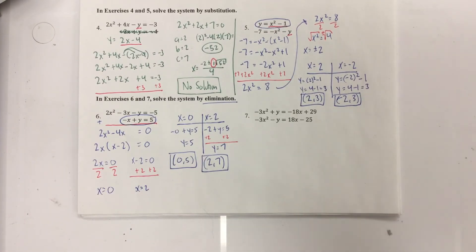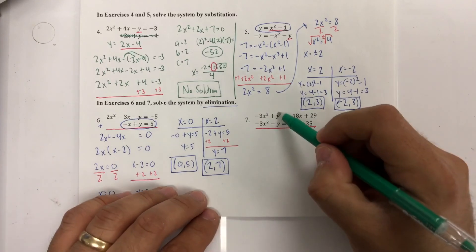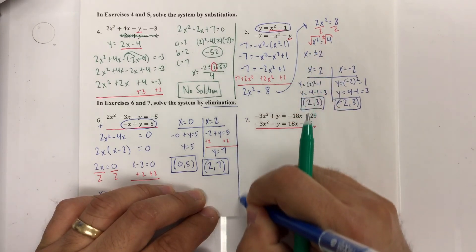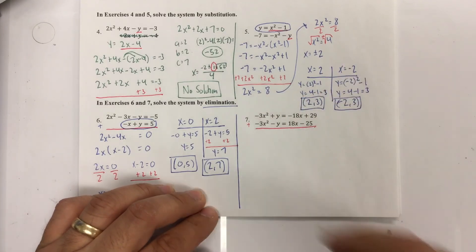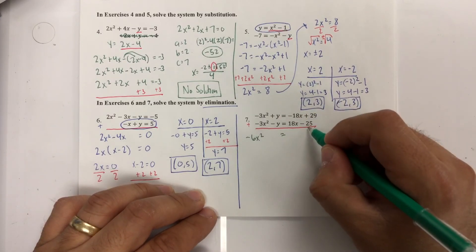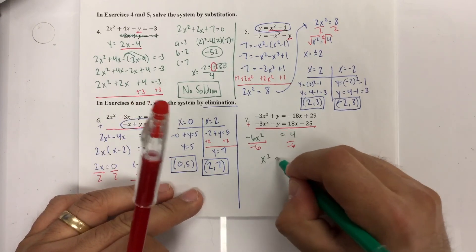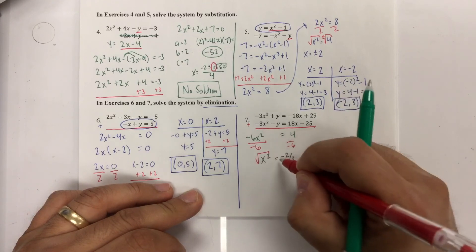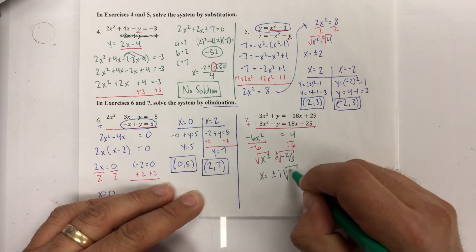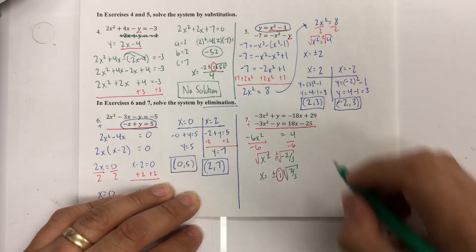For number 7, solve by elimination again. The y terms are opposites, so we cancel them. Adding the equations: −3x² + (−3x²) = −6x²; the 18x terms cancel (−18x and +18x); and 29 − 25 = 4. So −6x² = 4, meaning x² = −2/3. Taking the square root gives x = ±i√(2/3). Because the result involves i, the discriminant is negative, and there is no real solution.